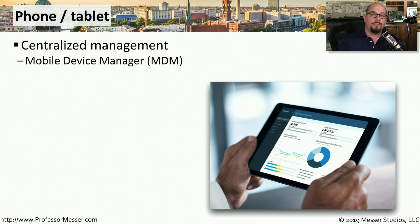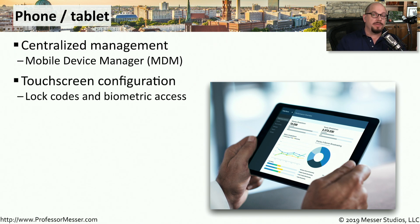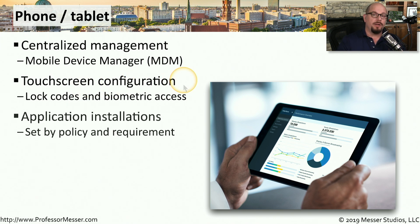If your users have mobile phones or tablets, you'll probably want to think about using a mobile device manager, or MDM. This provides centralized management so you can manage all of your mobile devices wherever they happen to be. For example, the MDM can be configured to force all devices to have lock codes or biometric access for security. You might also use your MDM to install all of the important applications used in your organization, so no matter where the device is, they'll have all their applications and data available.